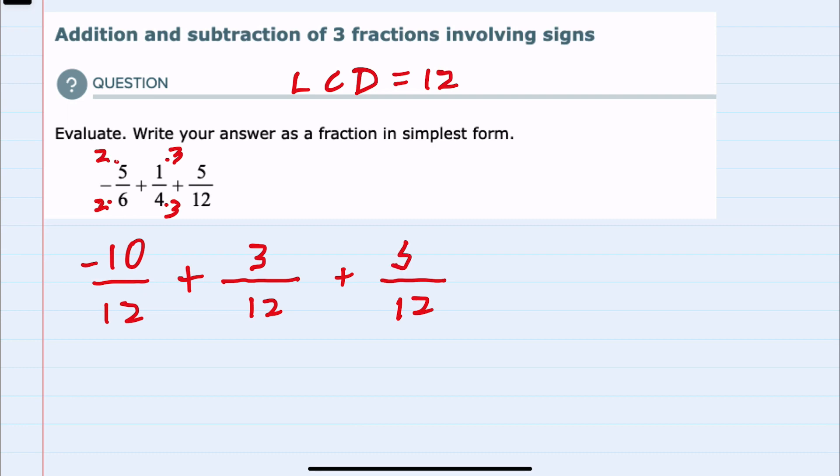Or I could think of it as just multiplying by 1 in the numerator and the denominator. And now that I've rewritten this with a common denominator of 12, I can add or subtract in the numerator, and I know that my denominator will be 12. And then adding left to right, negative 10 plus 3 would give us a minus 7. And then minus 7 plus 5 would be a minus 2.